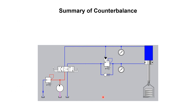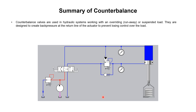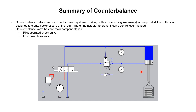To summarize: counterbalance valves are used in hydraulic systems working with an overrunning, runaway, or suspended load. They are designed to create back pressure at the return line of the actuator to prevent losing control over the load. The valve opens at its preset pressure — in our example 130 psi — and otherwise maintains back pressure to avoid overrunning. Counterbalance valves have two main components: a pilot operated pressure check valve and a free flow check valve.